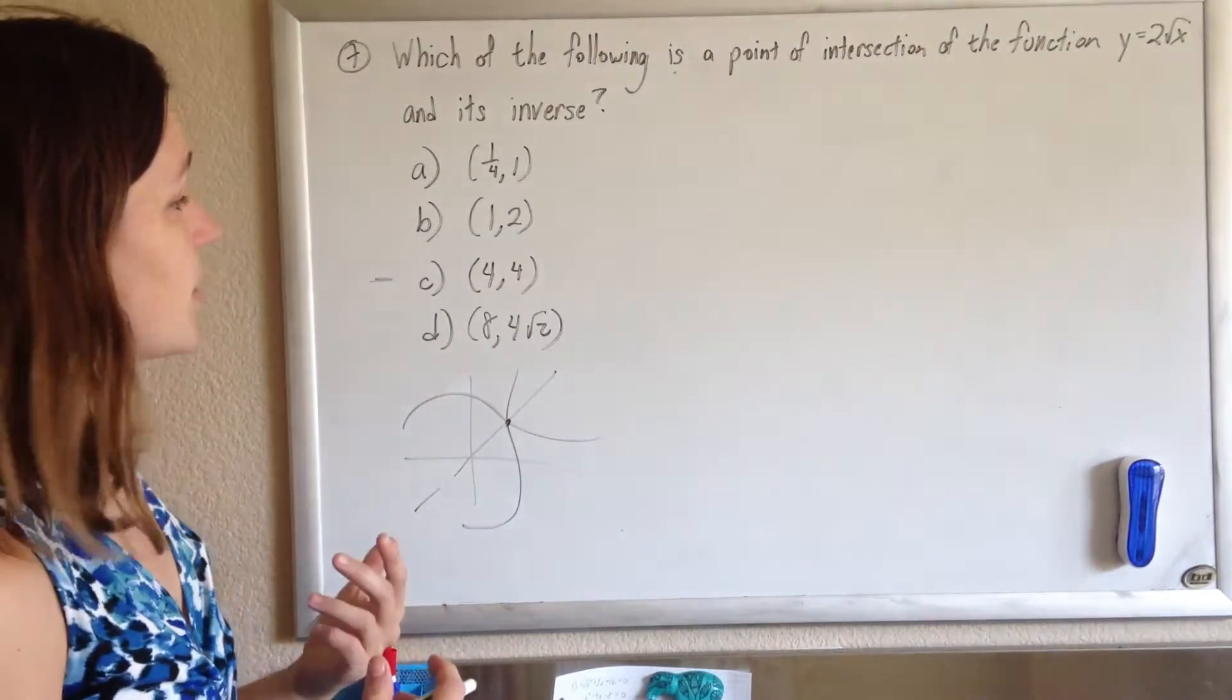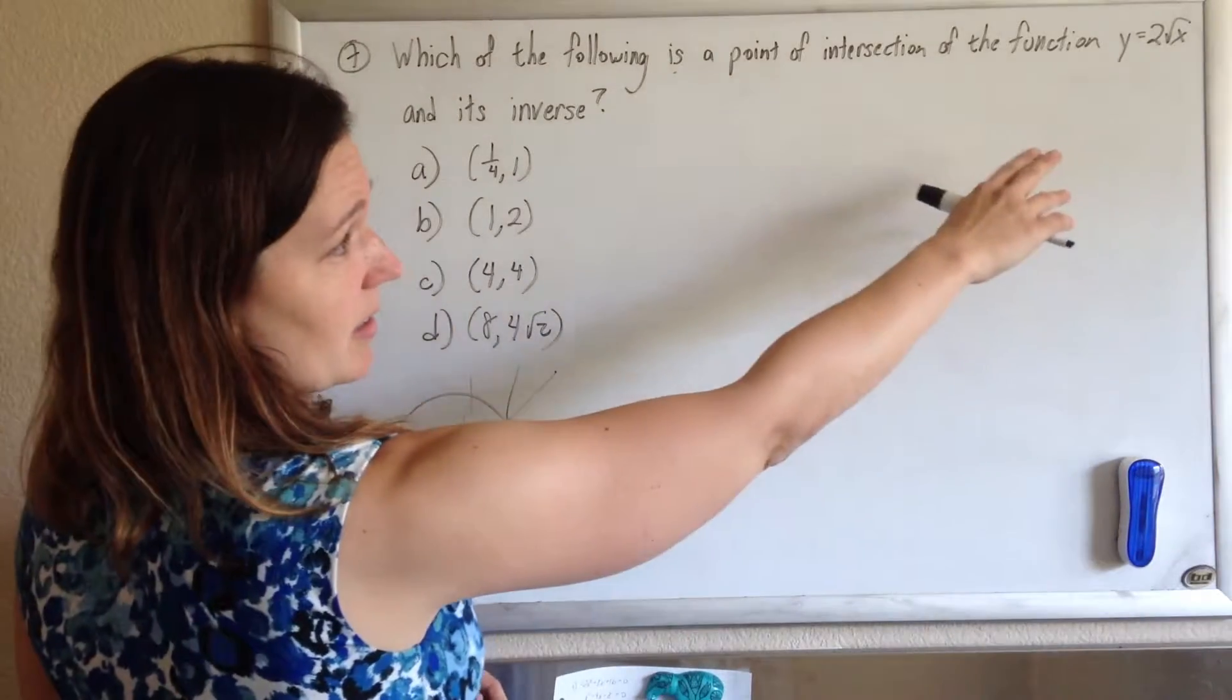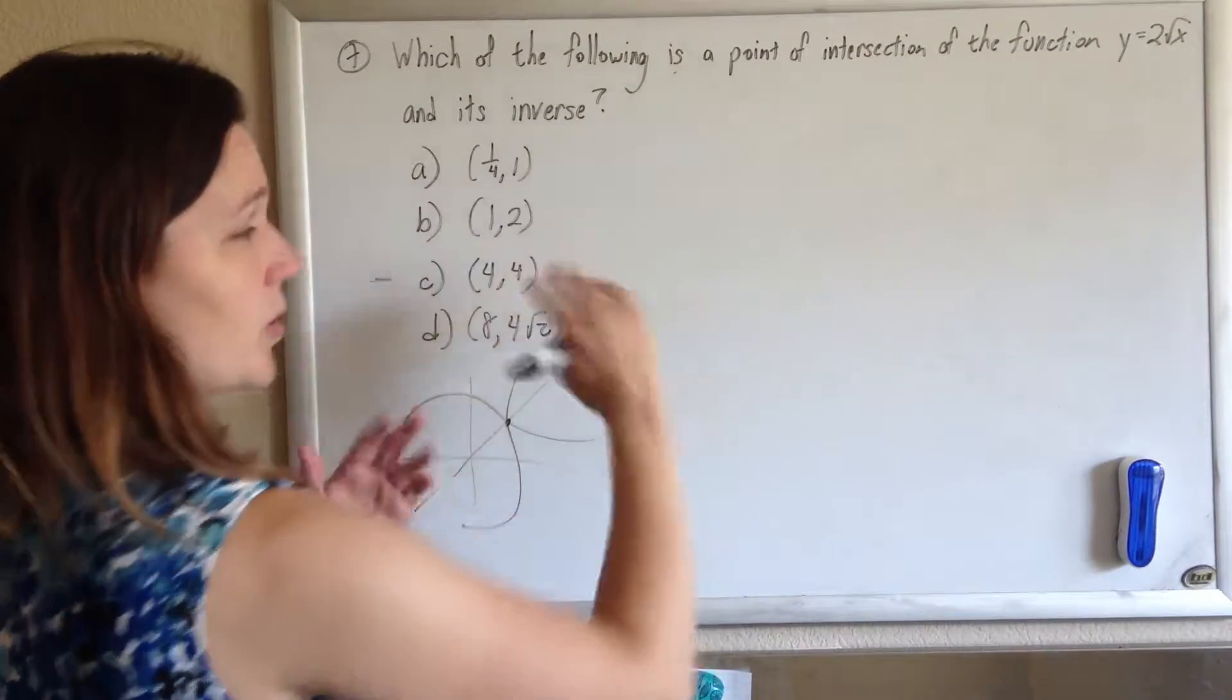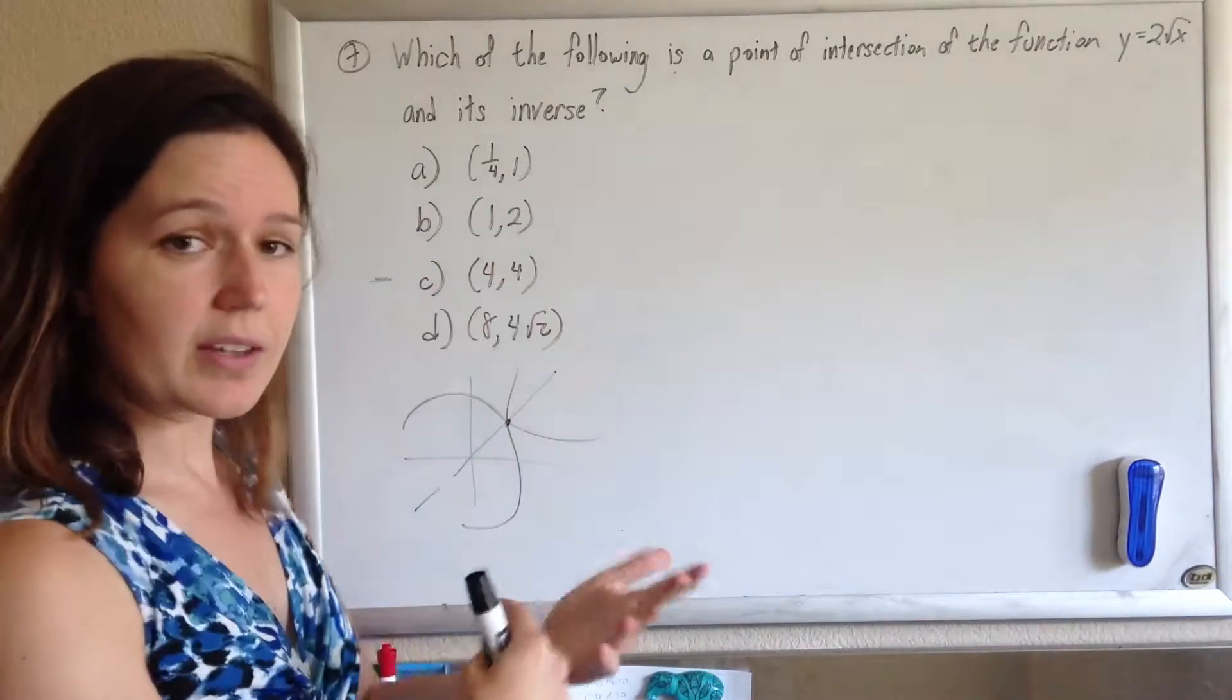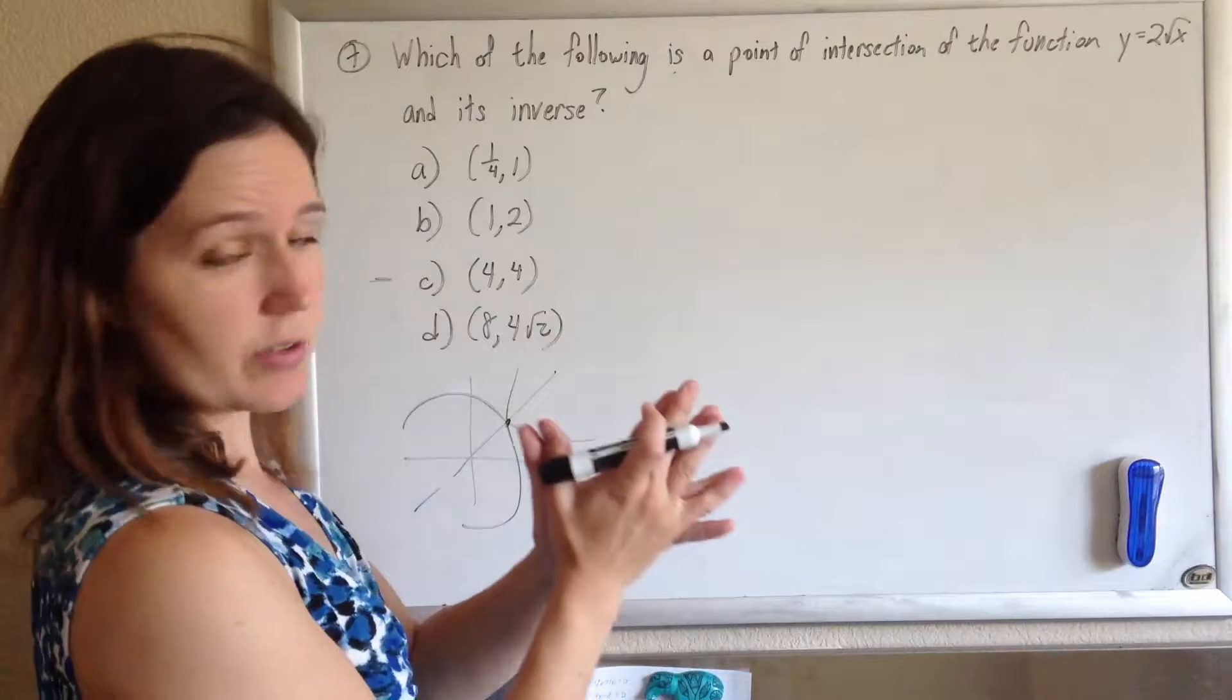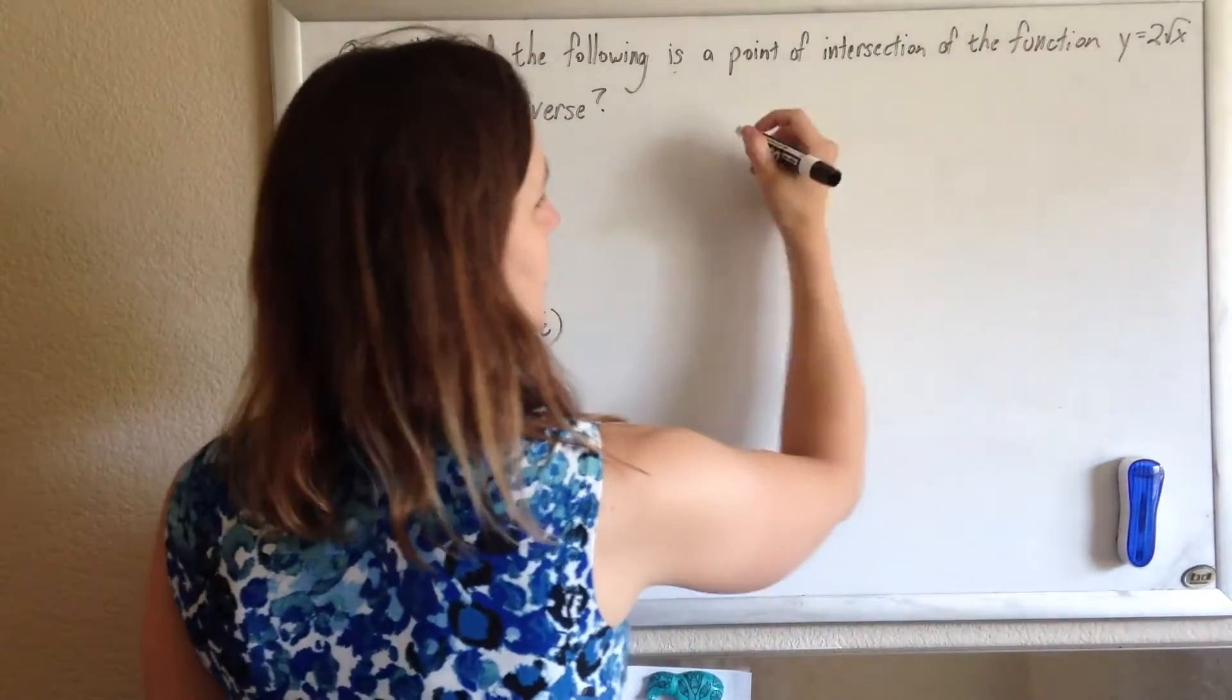But, let's just do it anyway for practice, and we'll verify it. So, I can do this just step by step. I want the intersection of that and its inverse. So, I'll find the inverse first, and I'll set the two functions equal to each other to find their intersection. So, to find the inverse, it's a switch and solve.